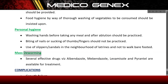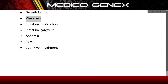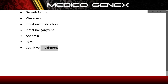Mass deworming: several effective drugs including albendazole, mebendazole, levamisole, and pyrantel are available for treatment. Complications of helminthiasis include growth failure, weakness, intestinal obstruction, intestinal gangrene, anemia, protein-energy malnutrition (PEM), and cognitive impairment.